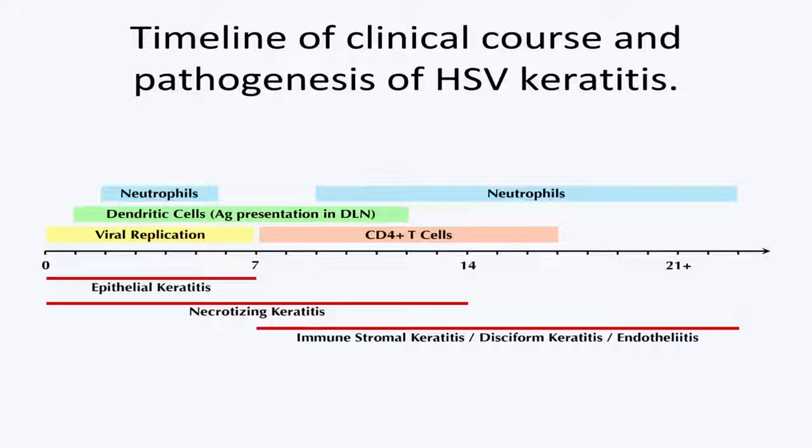There is another entity of herpetic endothelitis, with some fusion between deep stromal keratitis and endothelitis. Here it is the endothelium with KPs that is affected, and these respond nicely to oral acyclovir. Looking at the timeline for the clinical course and pathogenesis of HSV keratitis: epithelial keratitis occurs in the first 7 days when the virus is replicating; necrotizing keratitis also has virus replicating in the stroma in the first 14 days; and disciform immune keratitis is an immune reaction coming up to 7 days after.